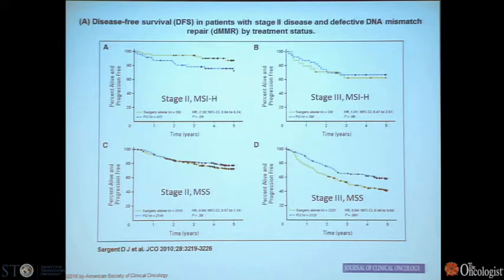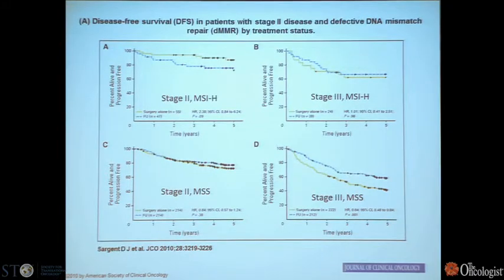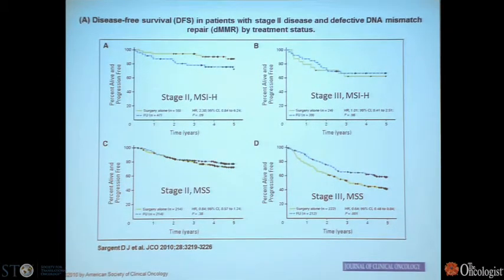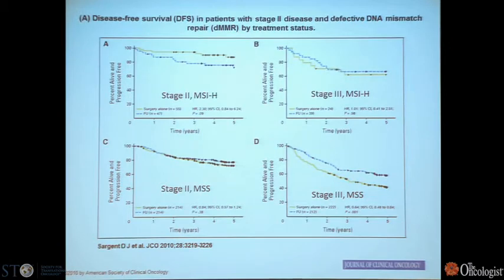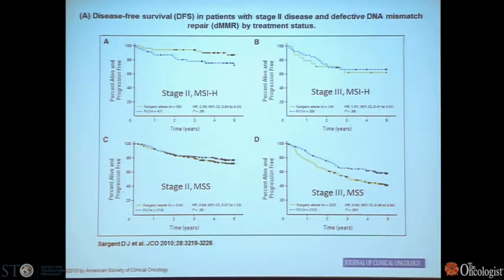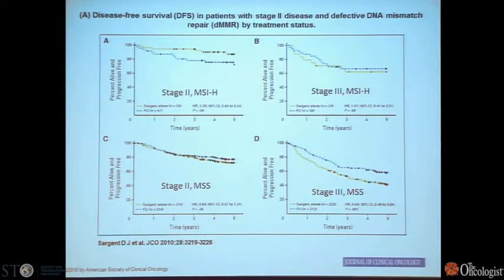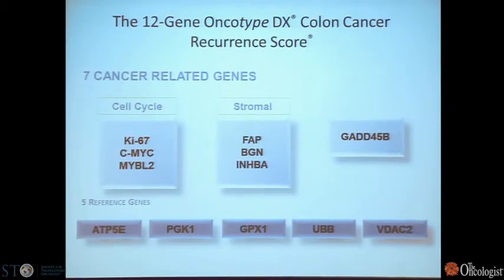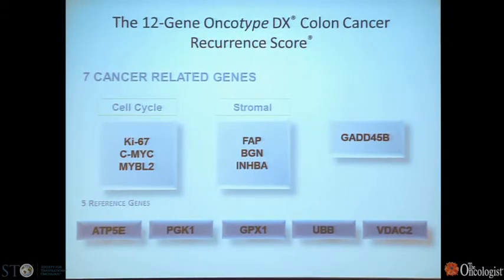Some of this may have to do with how 5-FU was given in the past, typically in ways more toxic than current delivery methods. But really what this study tells us is that it's hard to see a benefit of giving chemotherapy to someone with an early stage MSI high tumor. This is clinically useful and involves 15% of patients. What about the other 85%? We still have the dilemma of whether they should get chemotherapy given the small benefit.